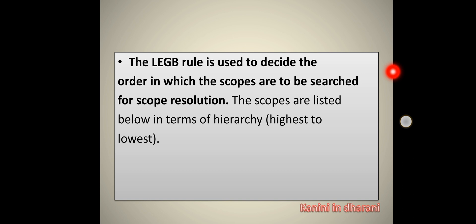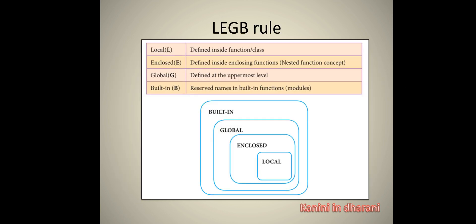To decide the order in which scopes are to be searched for scope resolution, we know how to execute the hierarchy. Let's look at LEGB: L is Local, E is Enclosed, G is Global, B is Built-in.